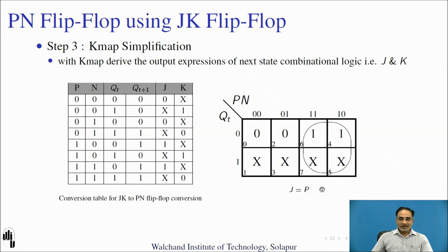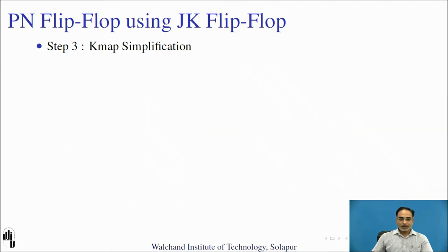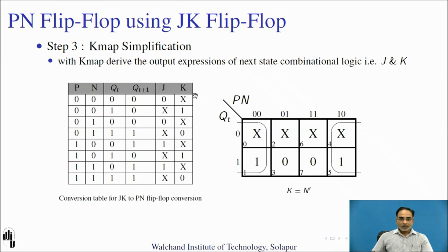Now let us derive the expression for K. Mapping the K column on the KMAP gives values: x1, x0, x1, x0. Again using the don't-care cases, we form a group of four cells, and the expression for this group is N-bar. So the expression derived is K = N̄ (N-bar).